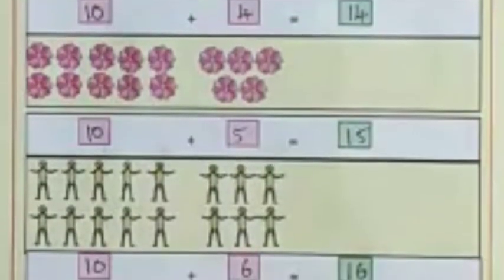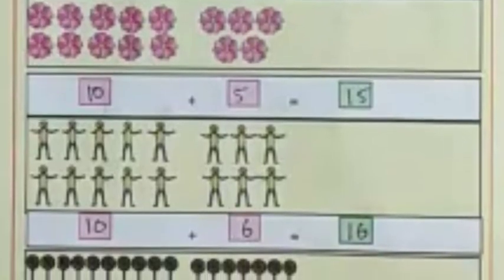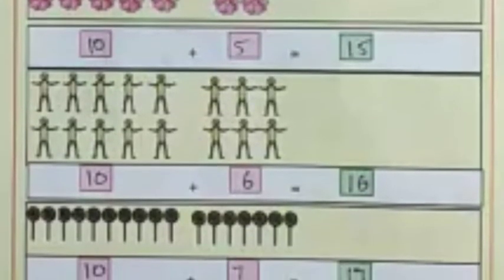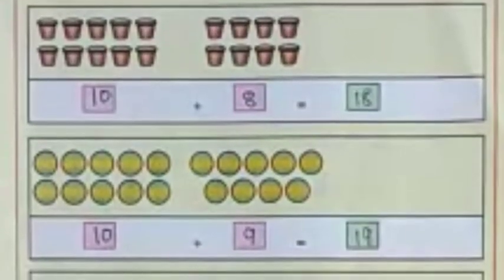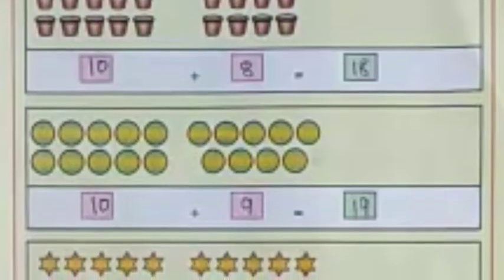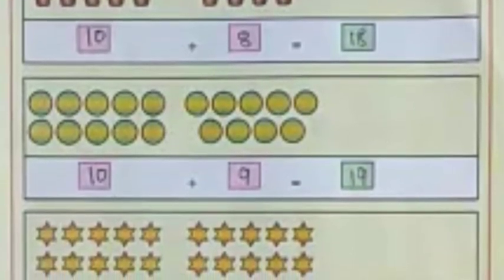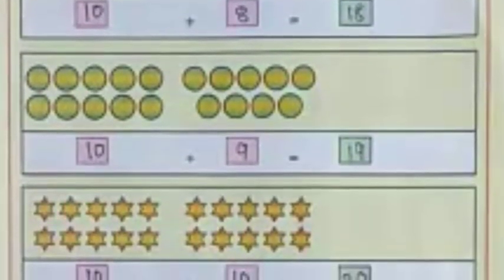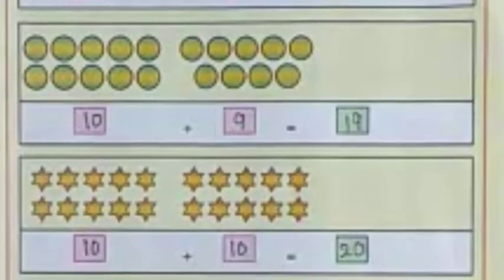10 dolls plus 6 is equal to 16. 10 candies plus 7 candies is equal to 17 candies. 10 glasses plus 8 glasses is equal to 18 glasses. 10 circles plus 9 circles is equal to 19 circles. 10 stars plus 10 stars is equal to 20 stars.